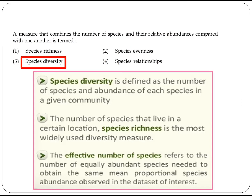The next question asks about a measure that combines the number of species and their relative abundance compared with one another. This is termed as species diversity. Option 3 is the right answer.